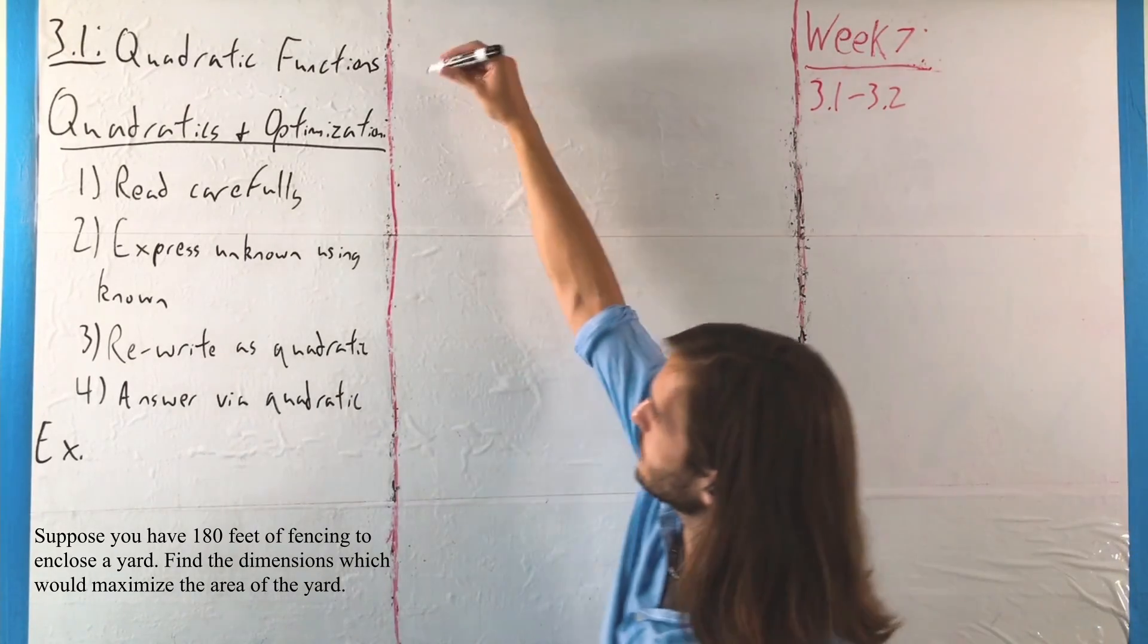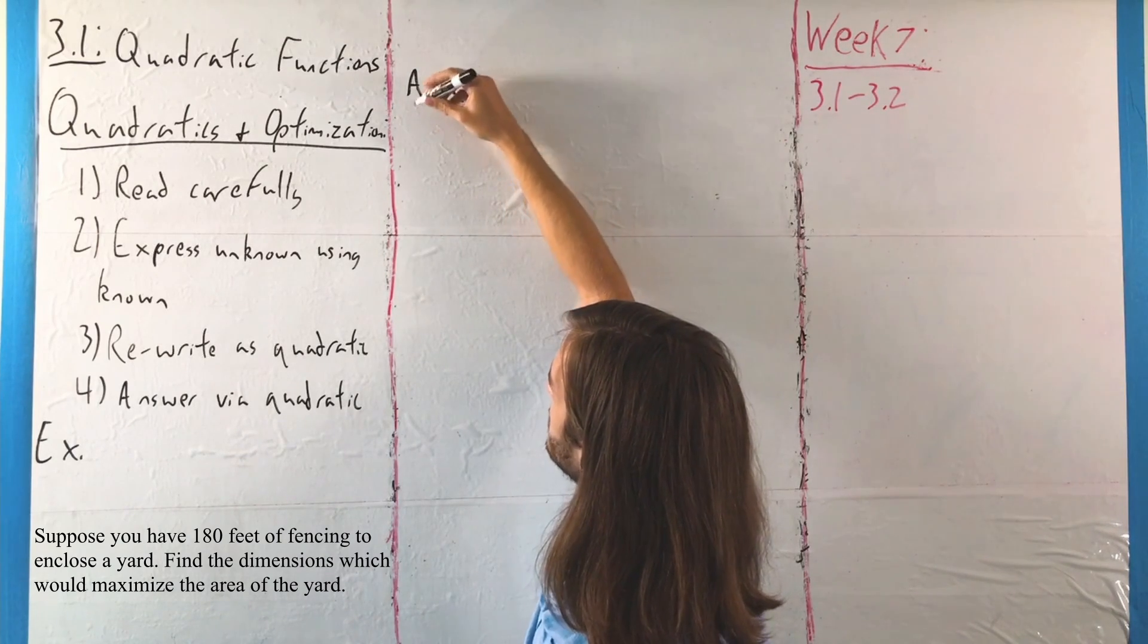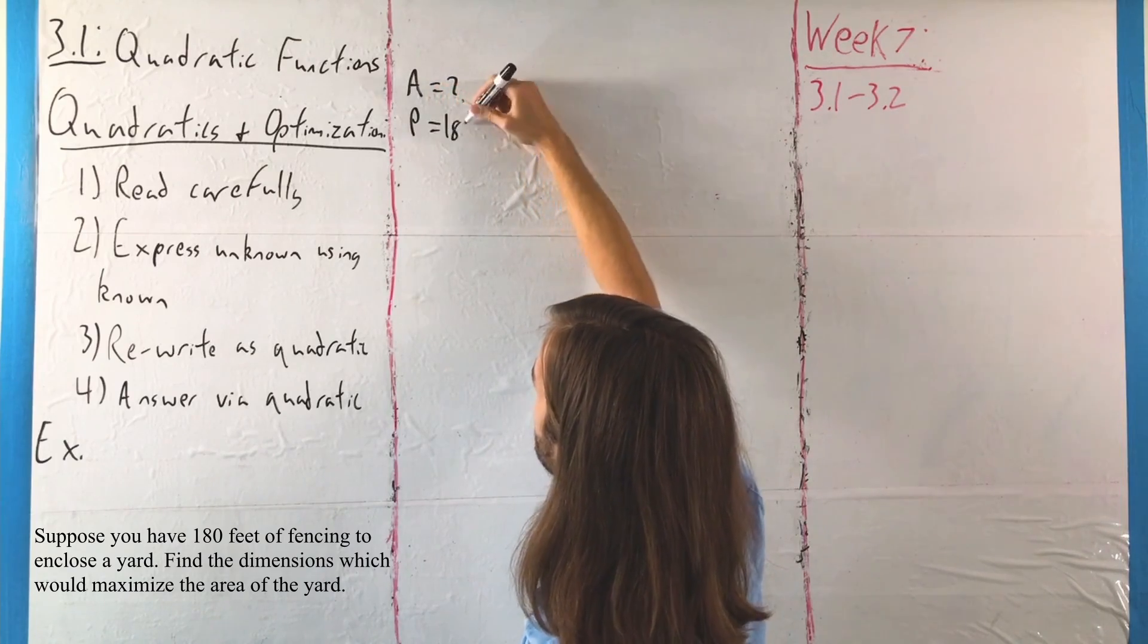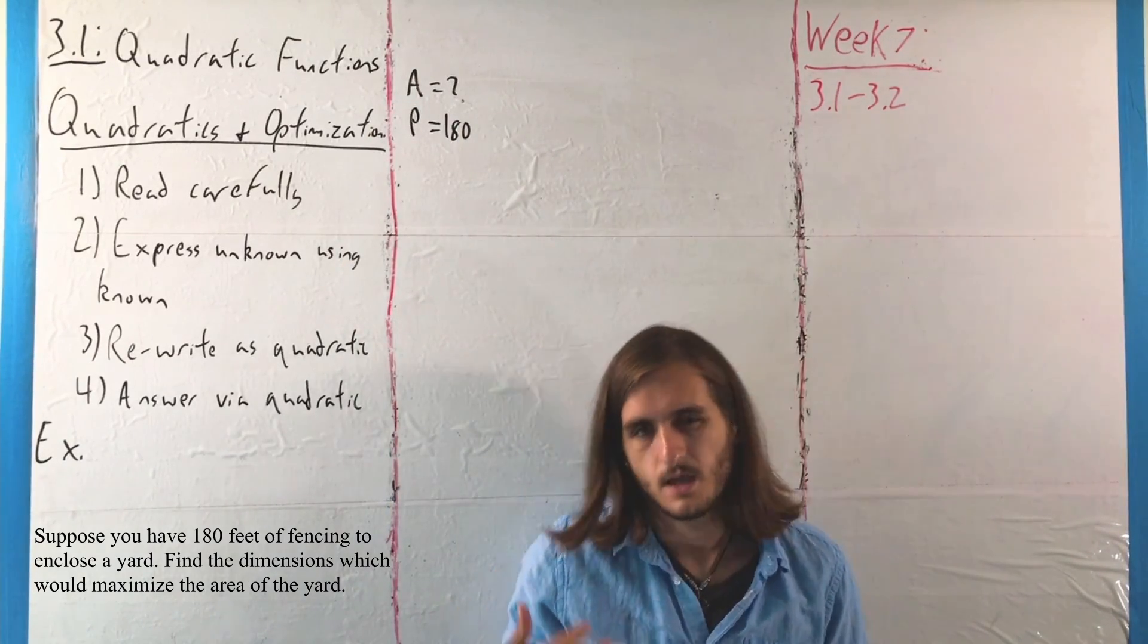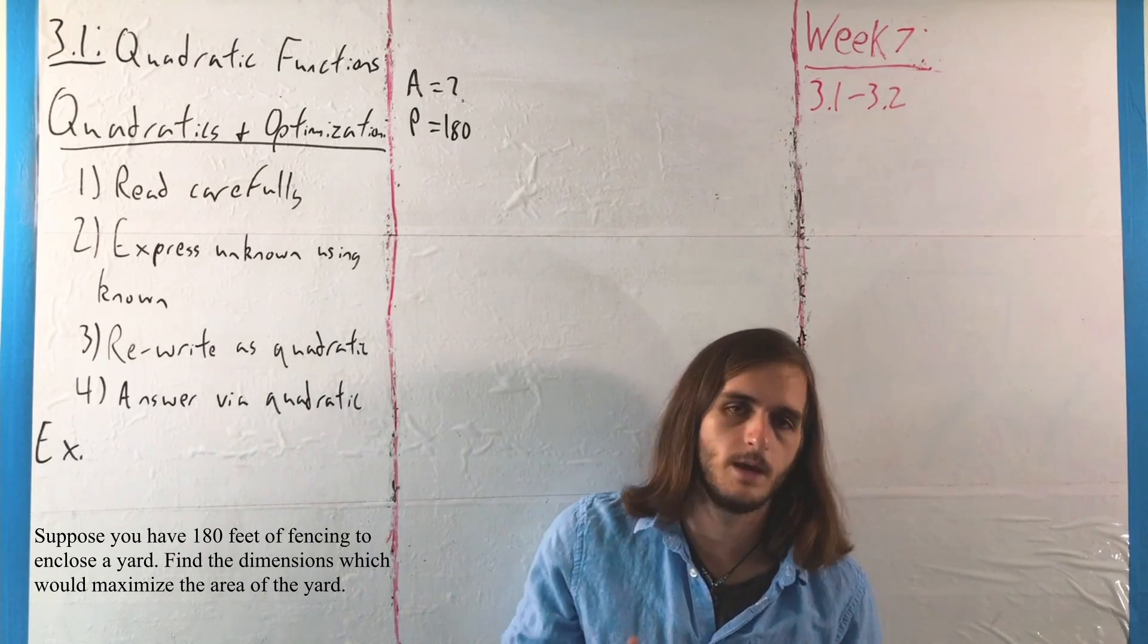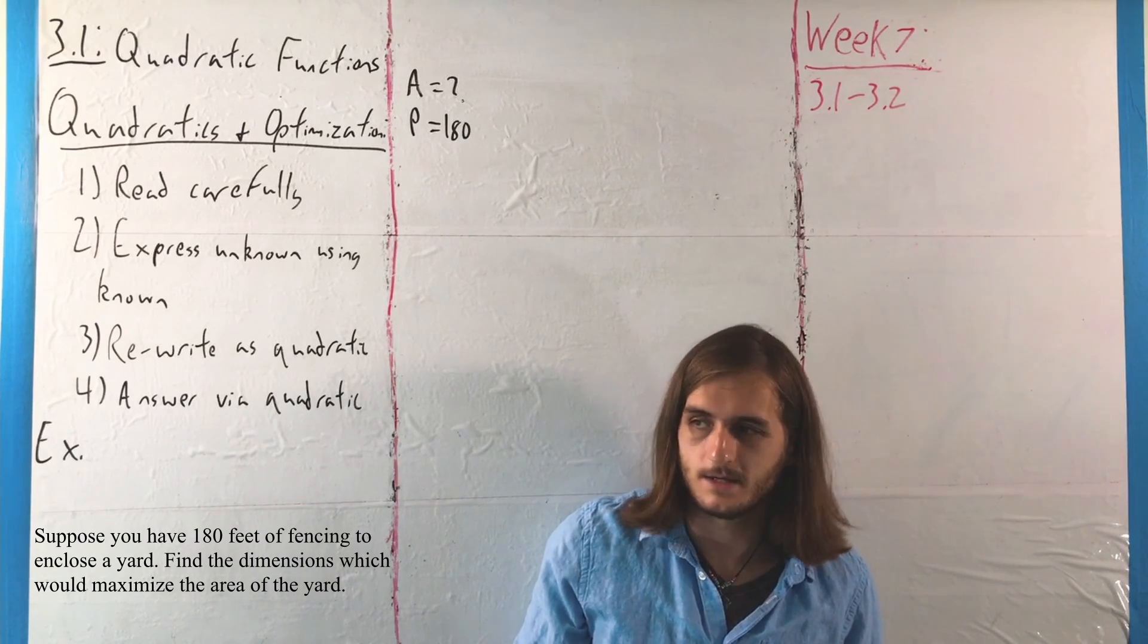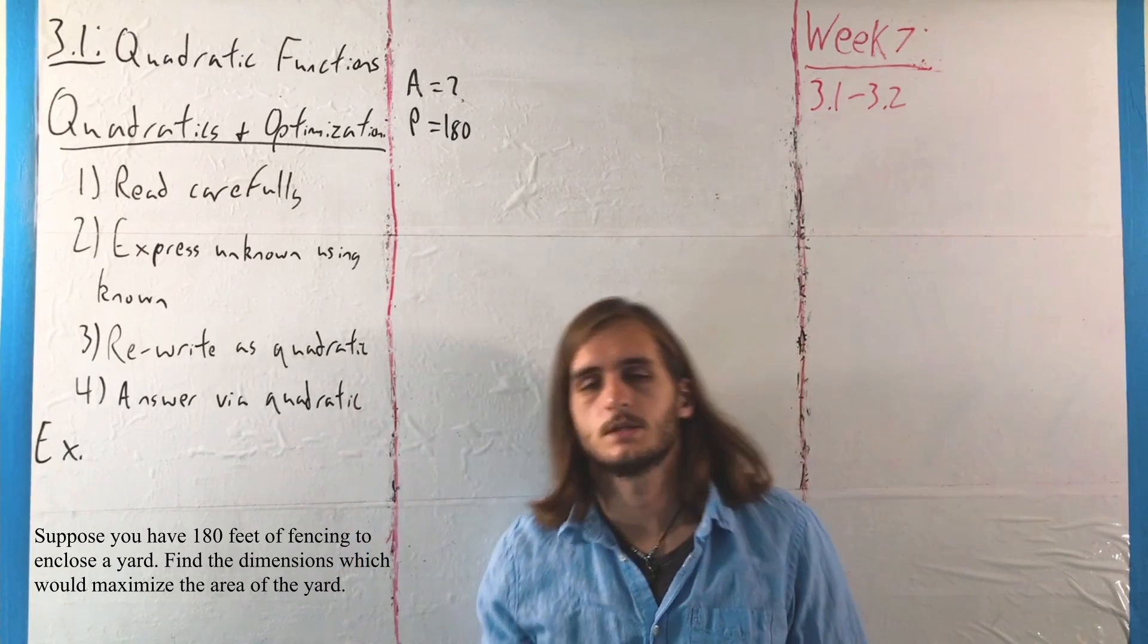So here, what we're trying to find for that first step is the value A, and what we have is the value P. The perimeter is 180 feet because we have 180 feet of fencing. If we're looking for the biggest area, it's going to use all the fencing. You can't make something better by taking away options. It just doesn't work out that way mathematically.